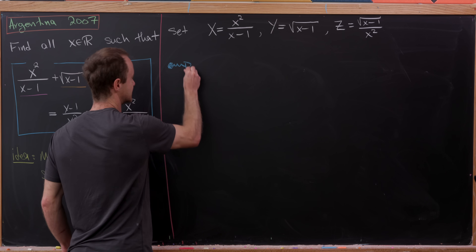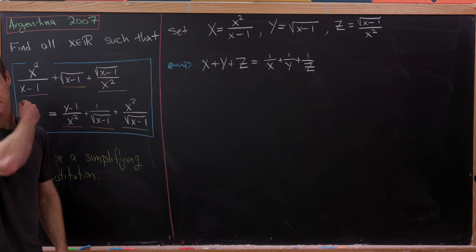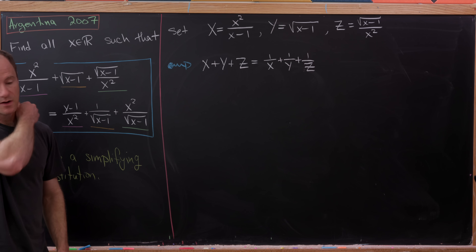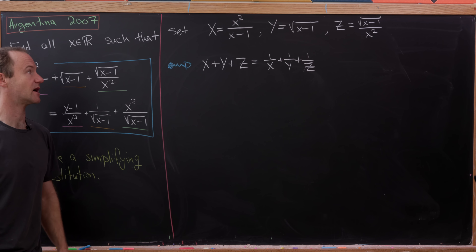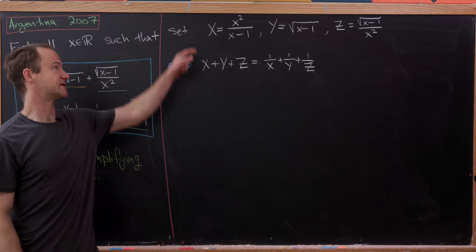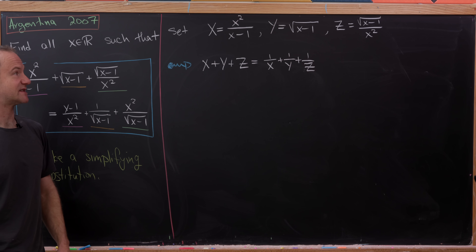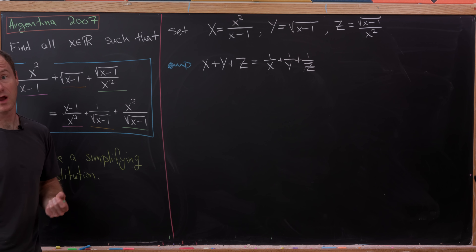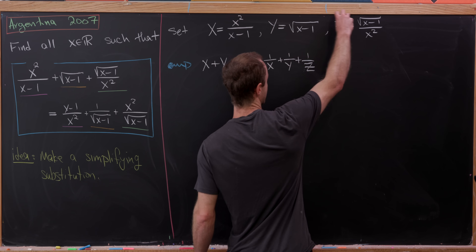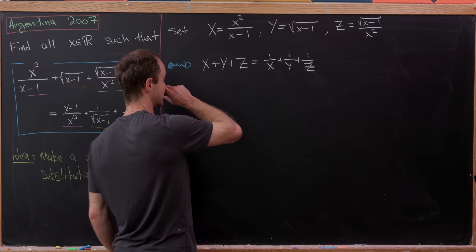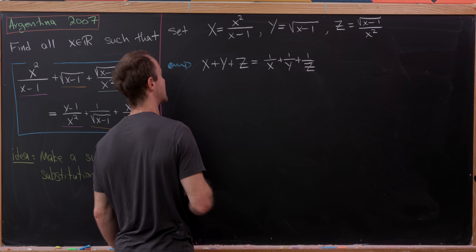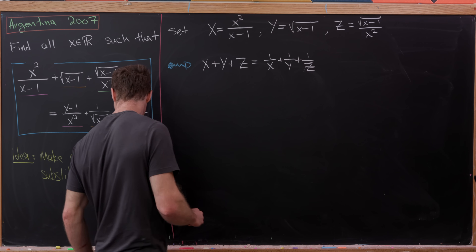The big idea of the solution is that we'd like to make a simplifying substitution. Looking more closely at this equation, we notice that everything on the left-hand side is exhibited on the right-hand side in the form of its reciprocal. This term is over here but they are reciprocals of each other; likewise the middle term and the third term share the same reciprocal structure. That gives us motivation to make the following substitution.